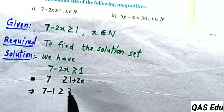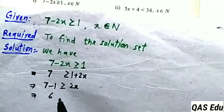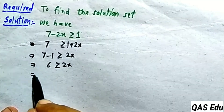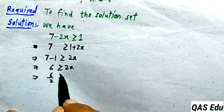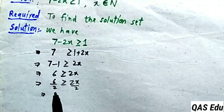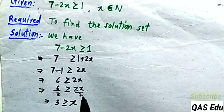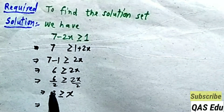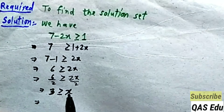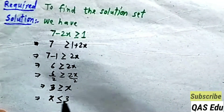7 minus 1 gives 6, which is greater than or equal to 2x. Dividing both sides by 2: 6 divided by 2 gives 3, so 3 is greater than or equal to x. That means x is less than or equal to 3.